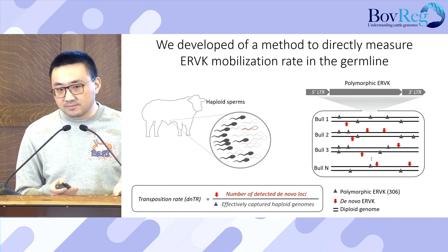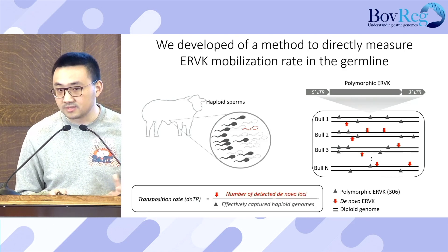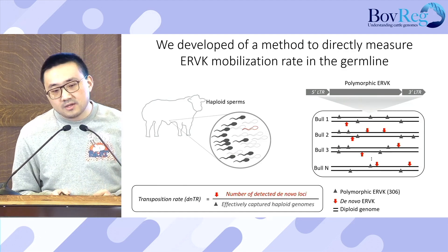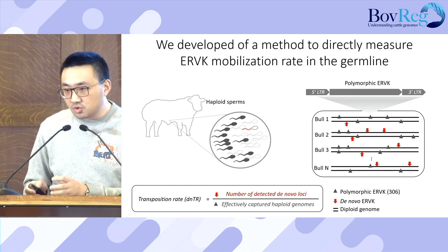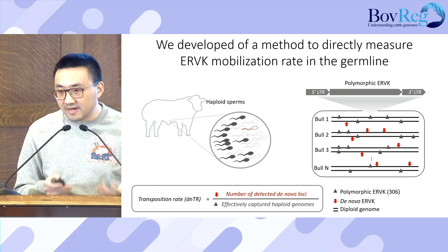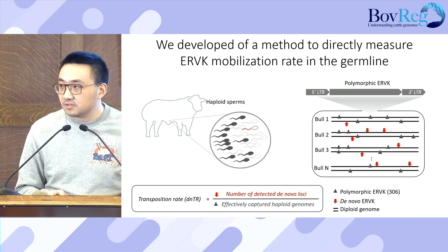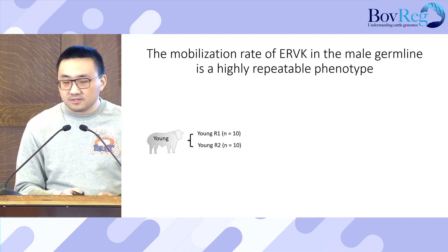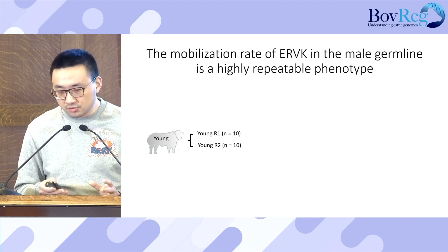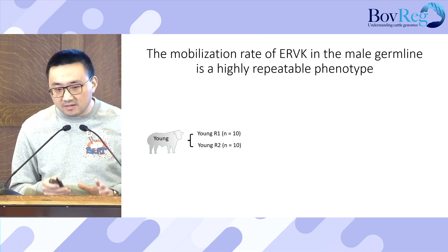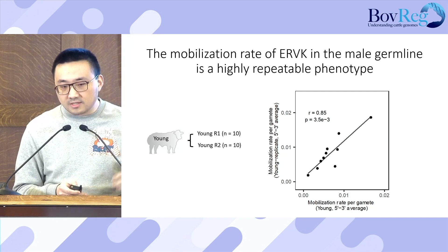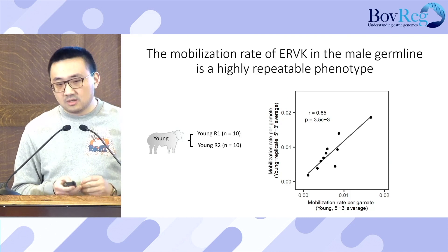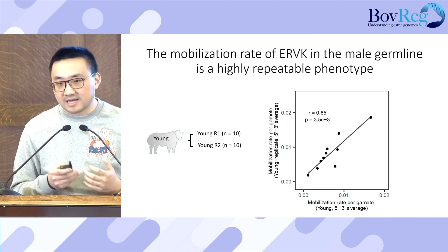There are two types of ERVK we can capture: de novo ERVK, and polymorphic ERVK inherited from parents used as internal controls. The number of de novo ERVK loci can be converted to a transposition rate divided by the estimated number of efficient haploid genomes, using the polymorphic ERVK as internal control. We first applied this method to DNA from two sperm straws from each of ten unrelated young bulls. The mobilization rate between replicate one and replicate two are highly correlated, suggesting the estimation of ERVK transposition rate in the male germline is highly repeatable.